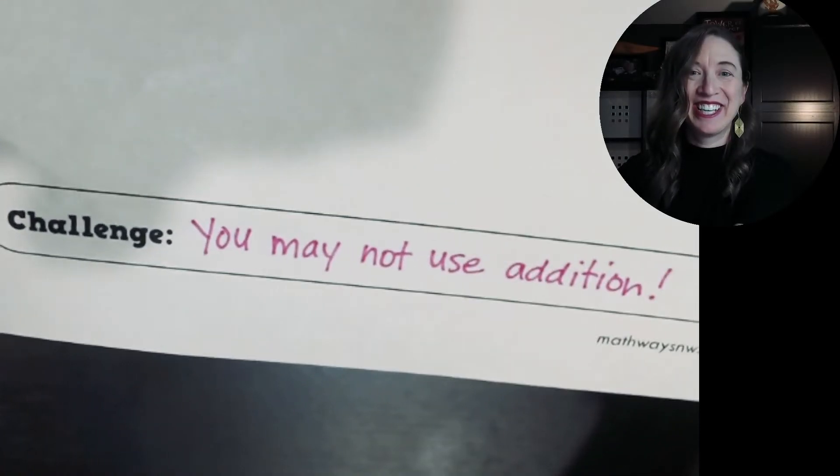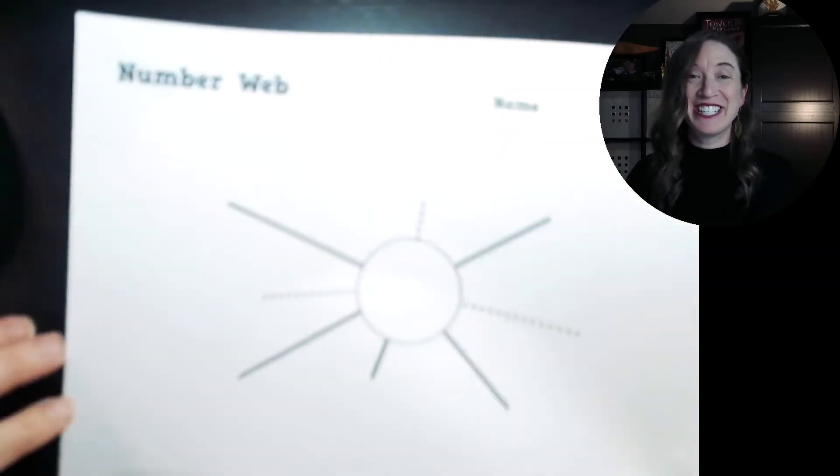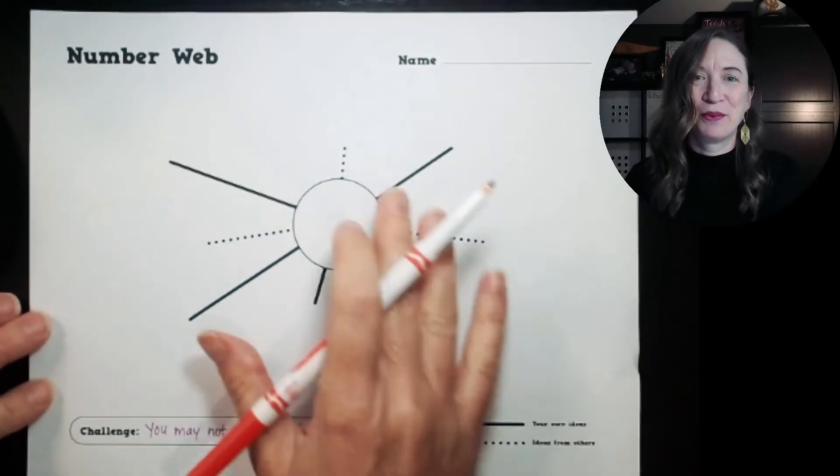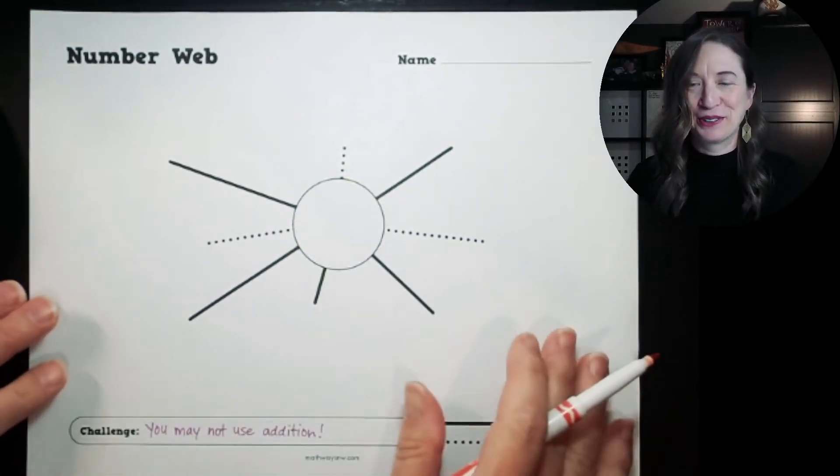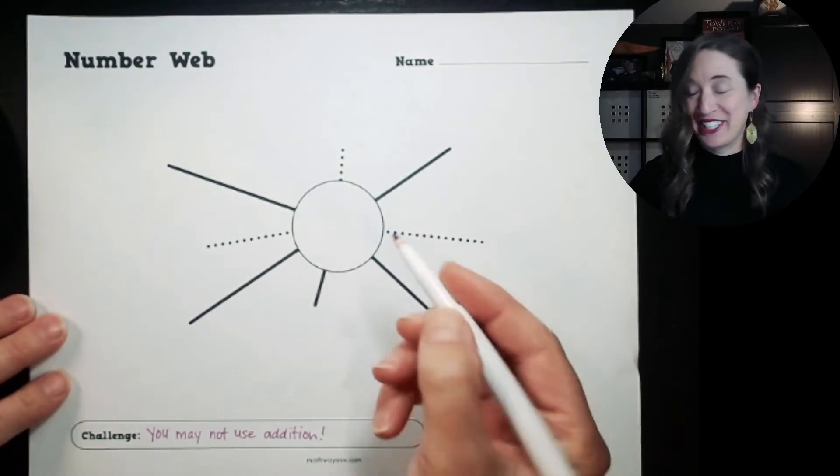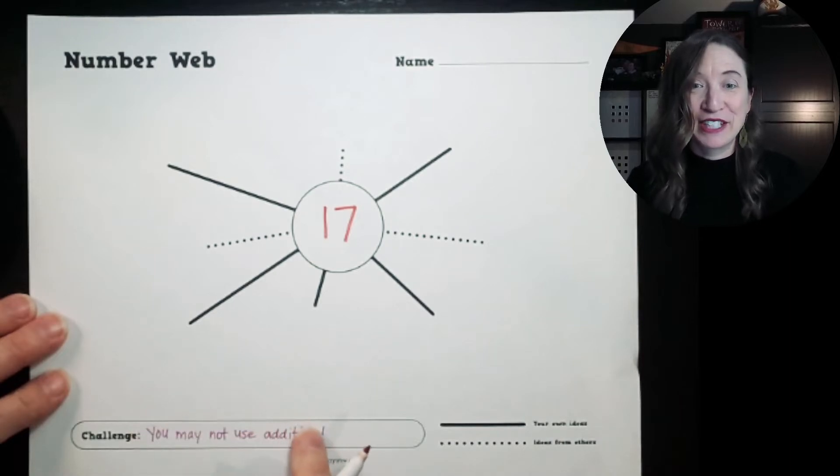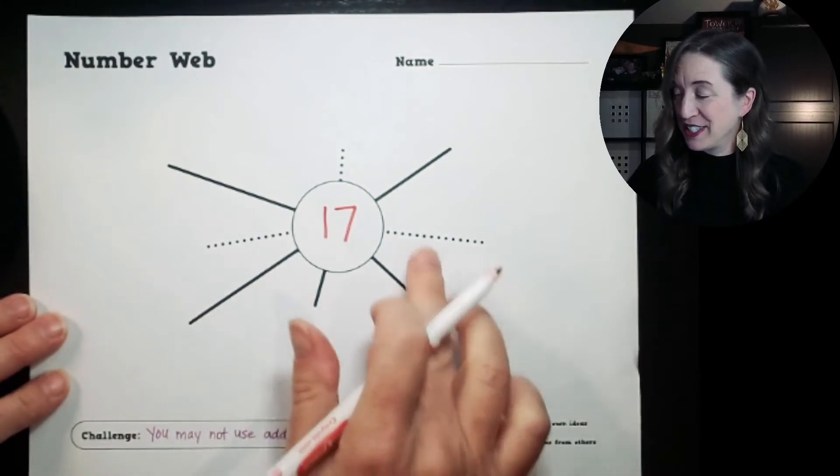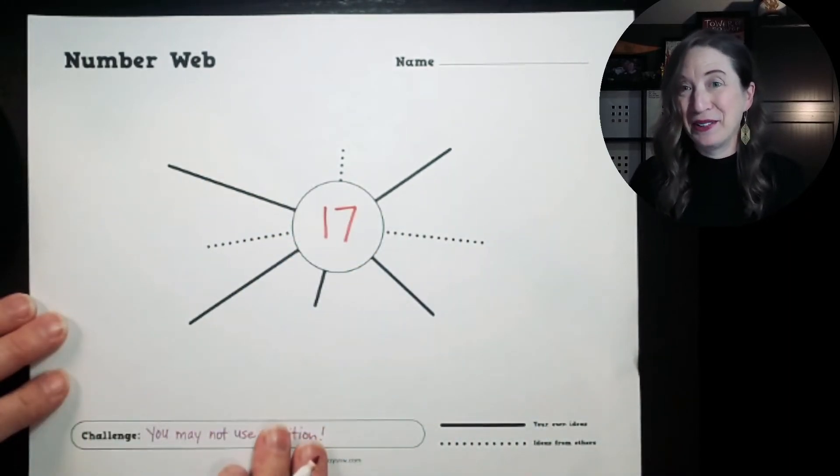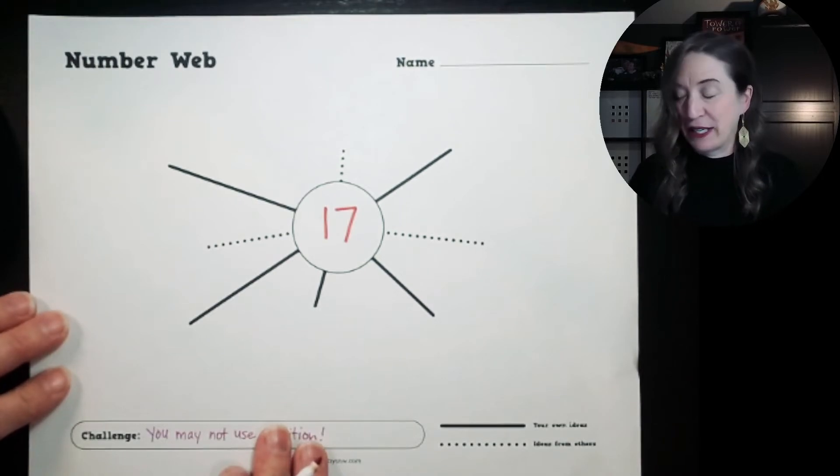What? This teacher has said I may not use addition on this number web. Oh my goodness, friends, what am I going to do? Well, this teacher has given me the number 17, and now I have to come up with five ways to show 17 without using addition. Let's see if I can do it.